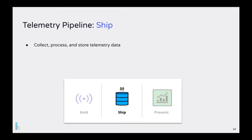Next is shipping. This stage is concerned with collecting the data that's been emitted, processing that data as needed, and storing it so that it can be used effectively in presentation. Depending on the use case, this might also be where your telemetry data is transformed or enriched. For example, we might want to parse data into a format better suited for the database we're using, or add contextual information that makes our data more helpful later on. There are many other considerations here, ranging from the type of storage we use, to how we aggregate and export our data, to how we process our data.